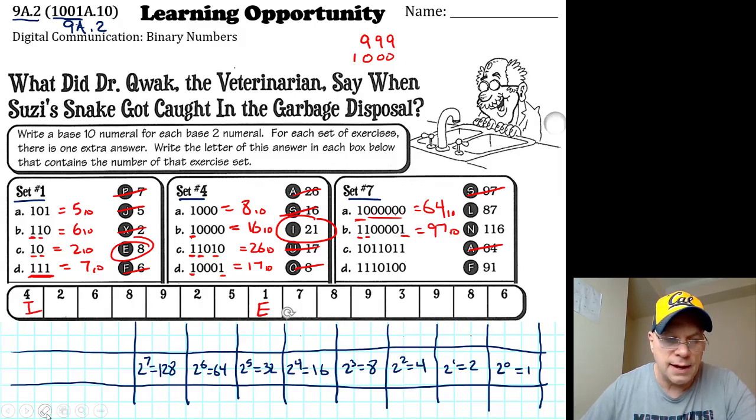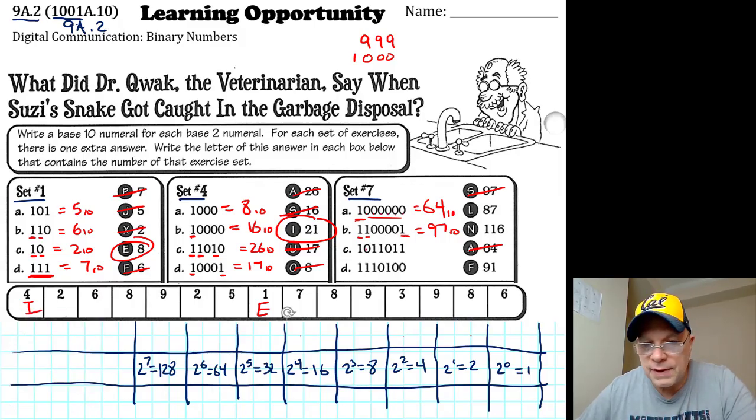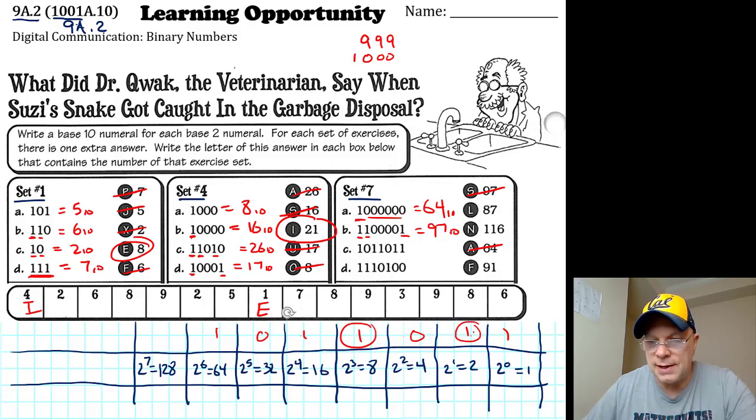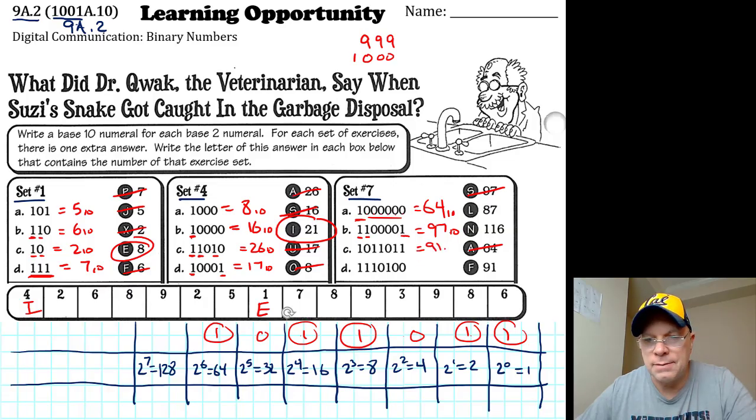For 7c, we've got a sixty-four, we don't have a thirty-two, we have a sixteen and an eight, and then a two and a one. So I have eight and two, that's ten, plus one more is eleven, plus sixteen is twenty-seven, plus sixty-four is ninety-one in base ten.